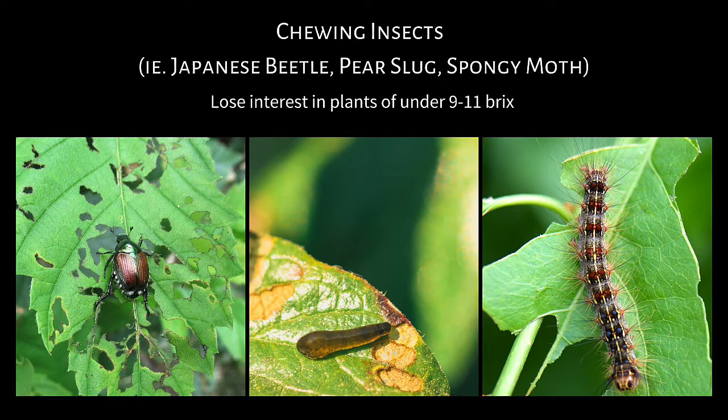Let's move on to chewing insects. How are they different? Chewing insects are consuming a lot of food when they chew. For example, if they're chewing a leaf, they're going to be consuming the entire leaf — the epidermal cells, the mesophyll cells, the phloem, the xylem tissue. Chewing insects have a much easier time going after plants that are not quite healthy, but very close to it.